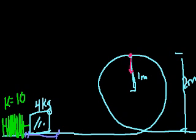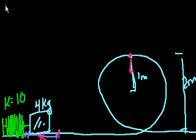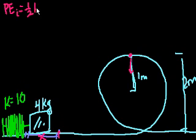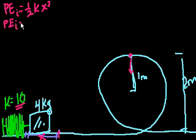We want to know how much to compress the spring — essentially, how much initial potential energy we need. If we compress the spring x meters, the potential energy of a compressed spring is PE_initial = ½kx². With k = 10, the initial potential energy is ½ × 10 × x² = 10x² joules.